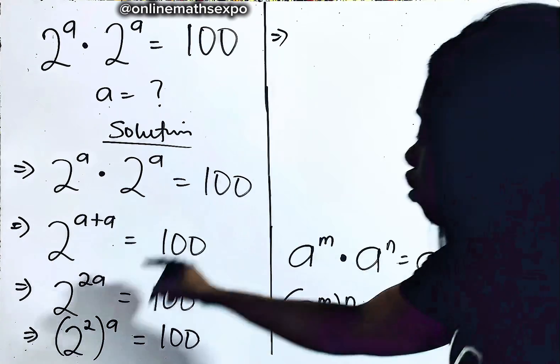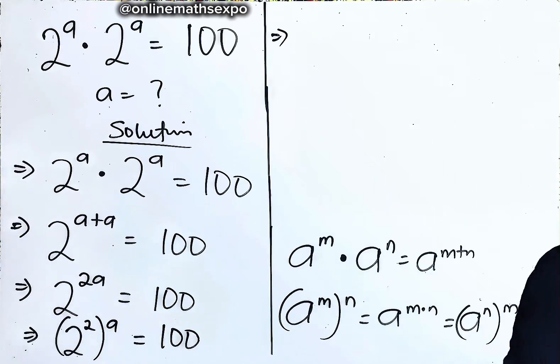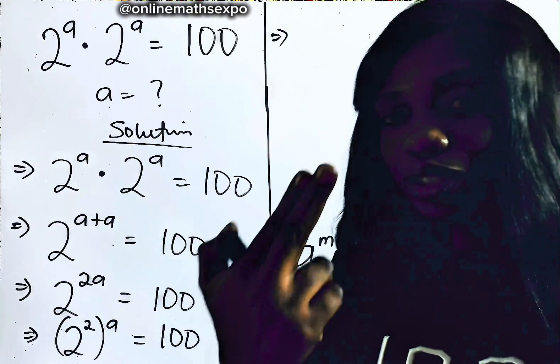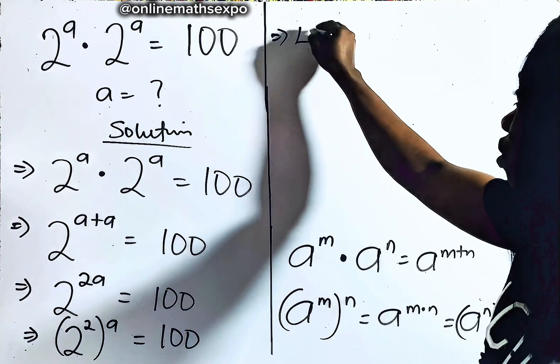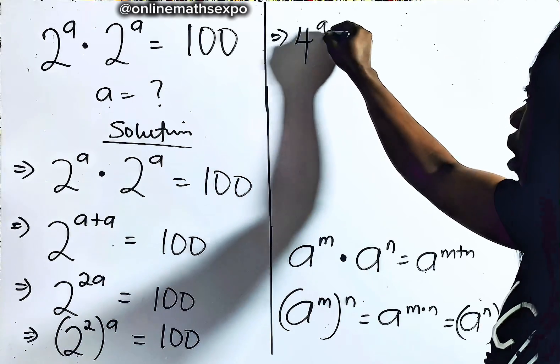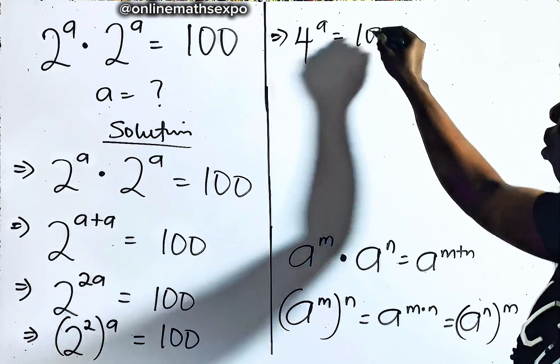So 2 to the power of 2 is 2 multiplied 2 times, which gives us 4. So that gives us 4 to the power of a is equal to 100.